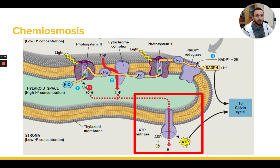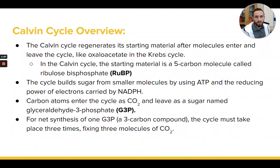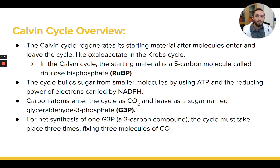The oxygen is just released to the atmosphere, so we won't see it again. In the Calvin cycle, there's going to be a series of chemical reactions that start and end with the same molecule. The starting molecule is this five-carbon molecule called RuBiP, or ribulose bisphosphate. What's going to happen is we're going to start building some sugar molecules by putting together smaller molecules and using ATP and those high energy electrons from NADPH.